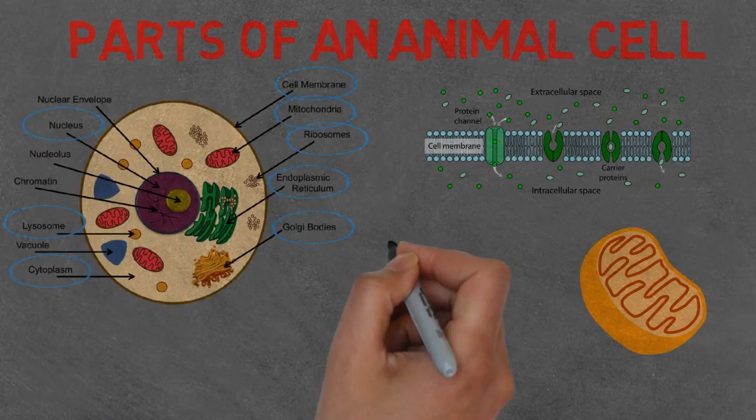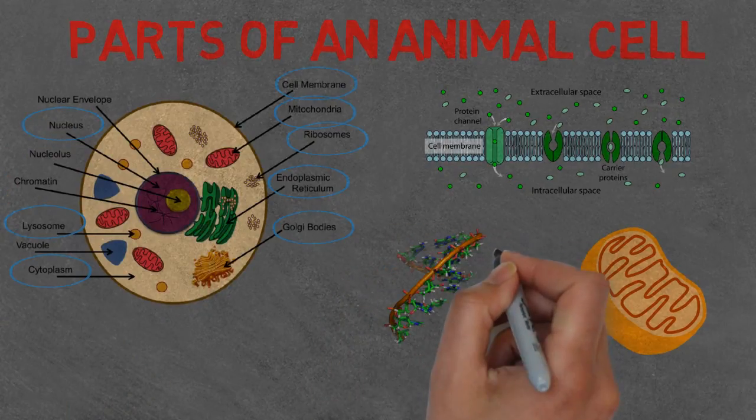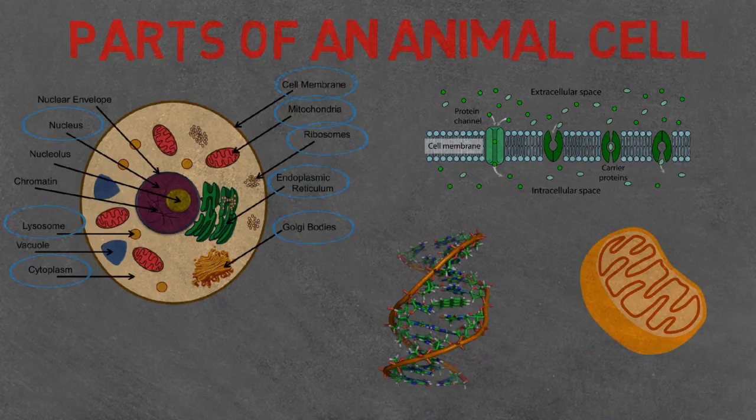Lastly, in an animal cell, we've got the nucleus. This isolates the cell's genetic material, which is DNA. The DNA within the cell is what directs and controls its activities.